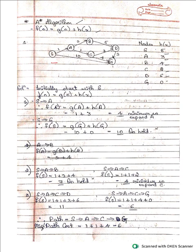So f(n) = g(n) + h(x). Since the heuristic value of G is 0, G is our goal node. From S, you can reach A and G. Now I will compute f(n) for S to A.